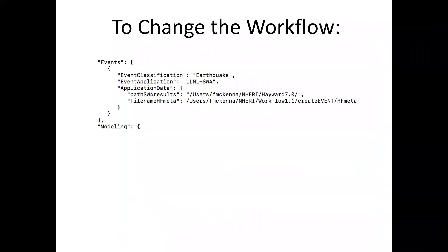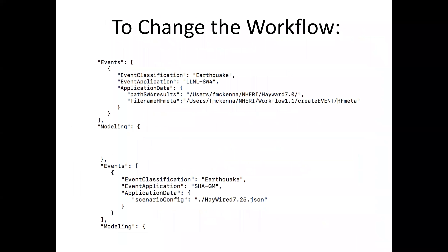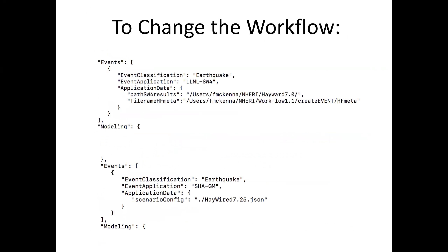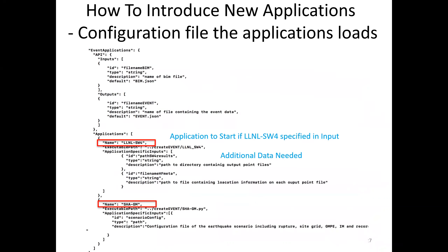To change the workflow, you go to the input file and make a change. For example, instead of using results from Lawrence Livermore's SW4 program, you can switch to using OpenSHA for your simulation. There's a configuration file that maps application names to the actual executables to run.